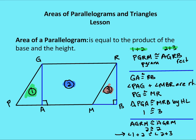So AGRM is going to be congruent to itself — the trapezoid AGRM is congruent to itself, so region 2 is congruent to region 2. Therefore, if 1 is congruent to 3, then 1 plus 2 is congruent to 2 plus 3, and 1 plus 2 is equal to 2 plus 3. If you add congruent areas to congruent areas, then the combined areas are going to be equal as well. So the area of a parallelogram is defined just as the area of a rectangle: base times height.